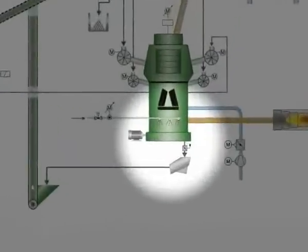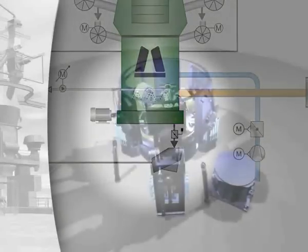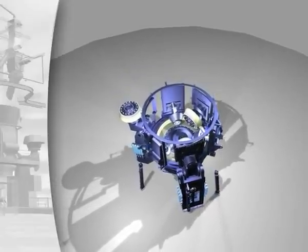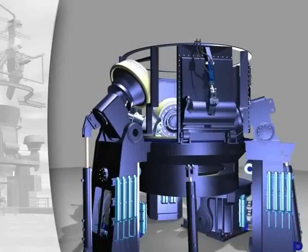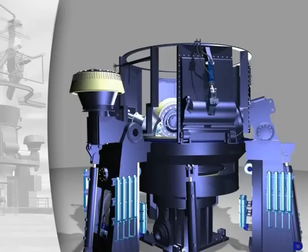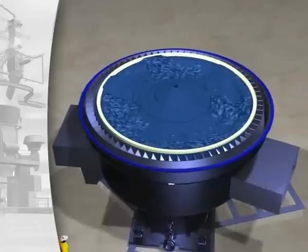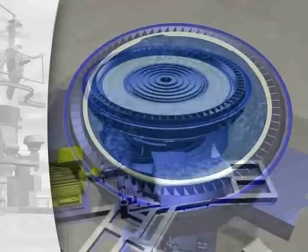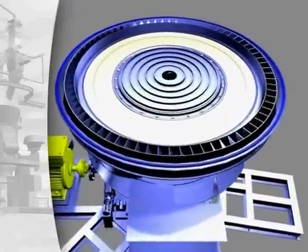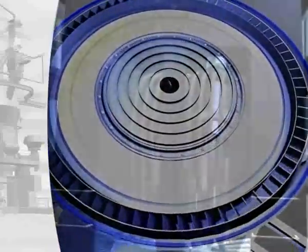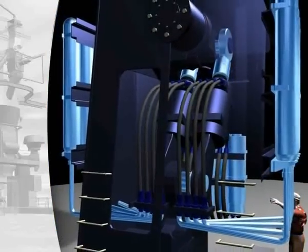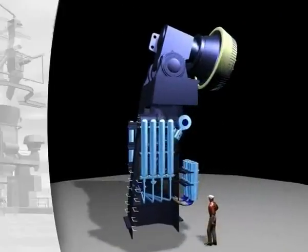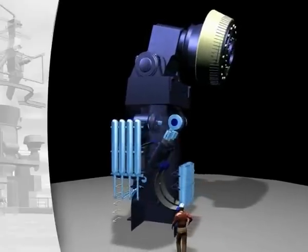Loesche mills are conceived to be service friendly. The gearbox and rollers can be installed and removed without dismantling the mill. The grinding plates, with swing-out rollers, are also readily accessible for quick exchange. The components of the hydro-pneumatic spring system for the rollers are installed in a pedestal outside the grinding space, where they are also freely accessible during grinding operations.